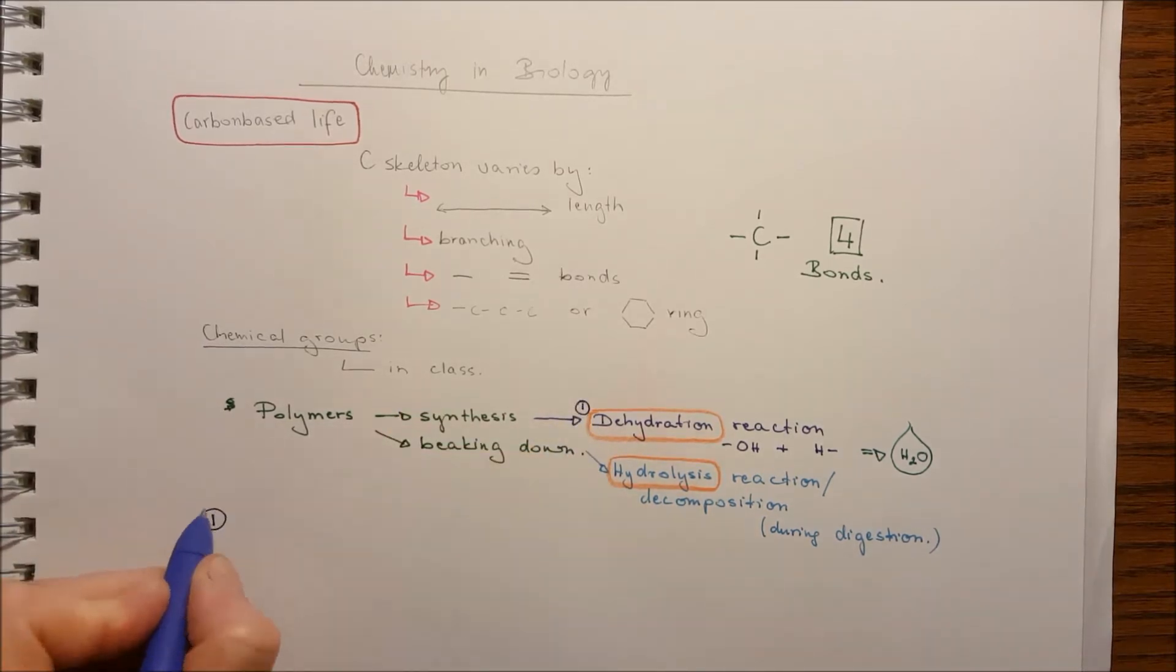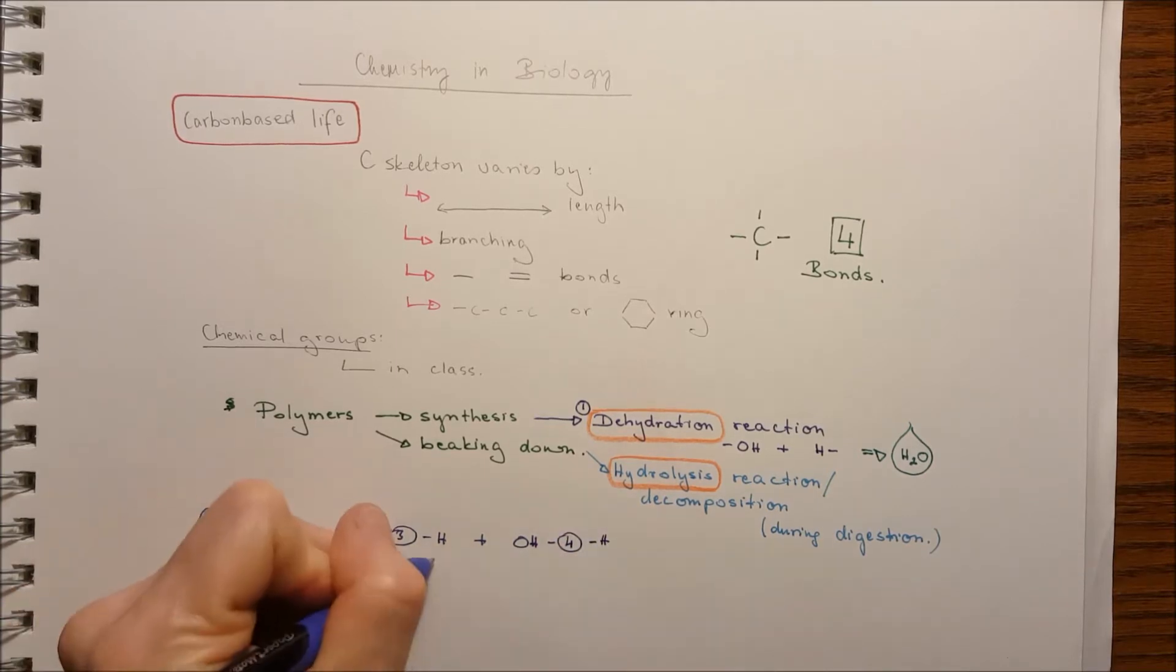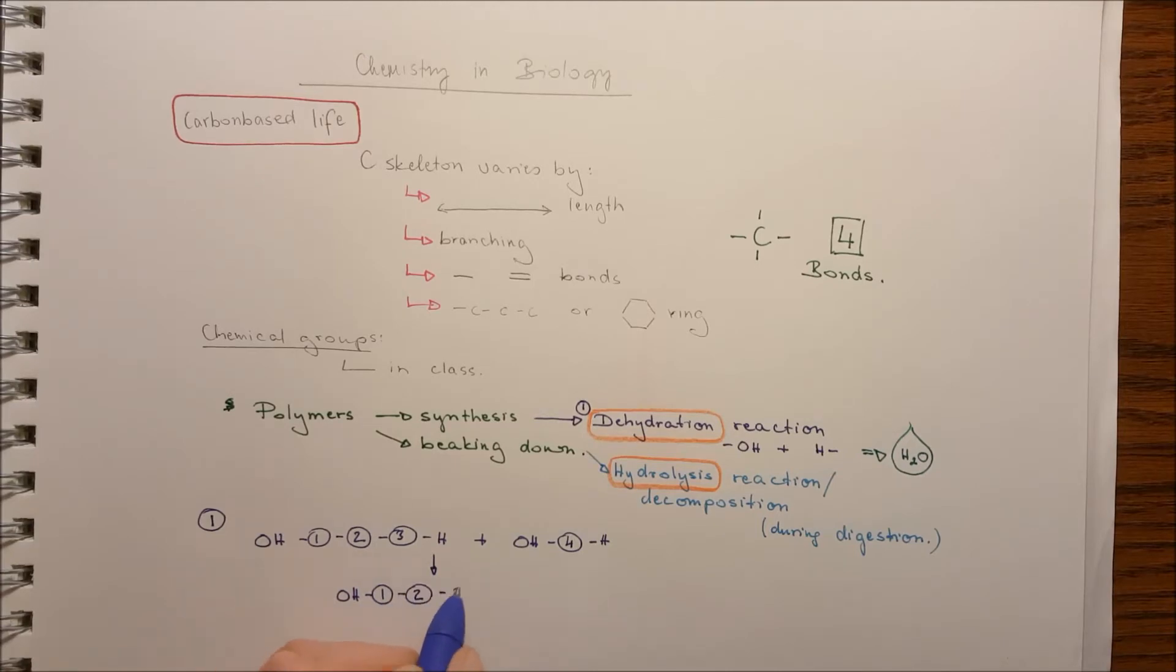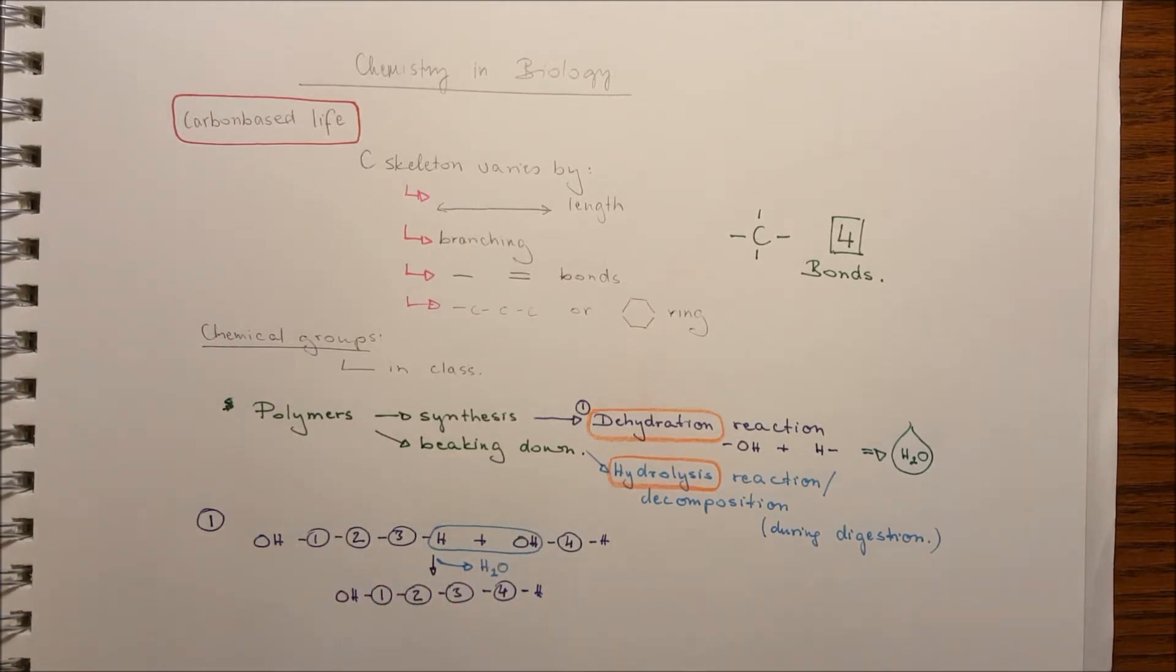So example for the dehydration reaction, we have a carbon chain that contains a hydroxyl and a hydrogen atom and also another one. So these are monomers and they combine together through dehydration reaction. These are the hydrogen hydroxyl group that bind together.